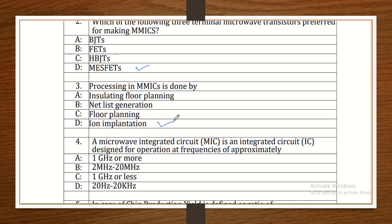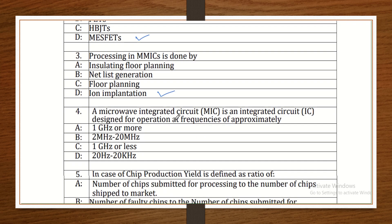A microwave integrated circuit is an IC designed for operation at a specific frequency range. Basically, these MICs are designed for use at high frequencies, meaning the microwave range. You need to identify which microwave frequency range applies.